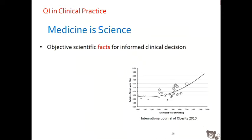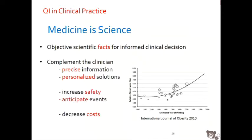So medicine is a lot of science. And just like I showed you with the Journal of Obesity, objective scientific facts make better informed clinical decisions — this is what quantitative imaging counts in practice: to complement a clinician with precise information that is personalized, increase safety, anticipate events because knowing something earlier and precisely can save lives, also decrease costs, which increases access to clinical facilities for many people. Modeling, automation, and artificial intelligence are tools we can use in quantitative imaging.